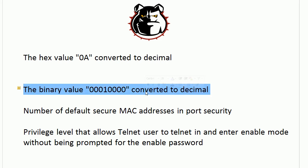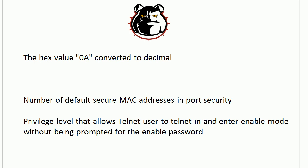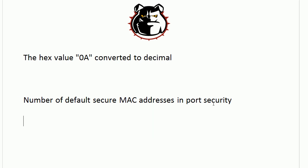The next one is very close to 16, and that's the privilege level. We need to set privilege level 15 on the VTY lines. Remember that command — the default privilege level is zero, but if you want your Telnet user to use the VTY password and go straight into enable mode without needing to give the enable password, you have to set that to privilege level 15.